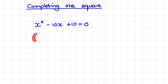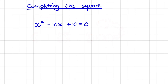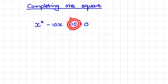Remember, to factorize is to create two brackets that will multiply out to create this trinomial. But if we use the factors of 10 to create the factors in our brackets, we would notice there are no factors of 10 that will create the middle term. So therefore, we need to use a different method called completing the square.